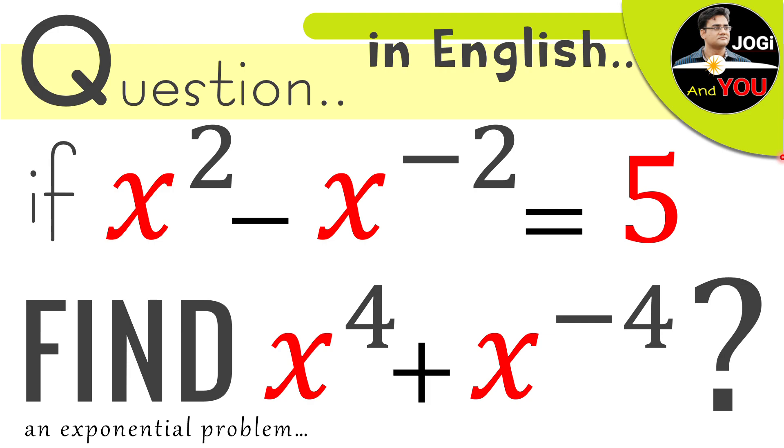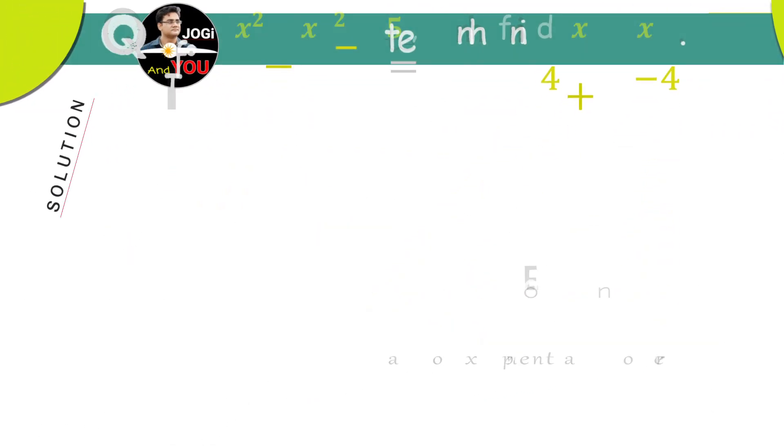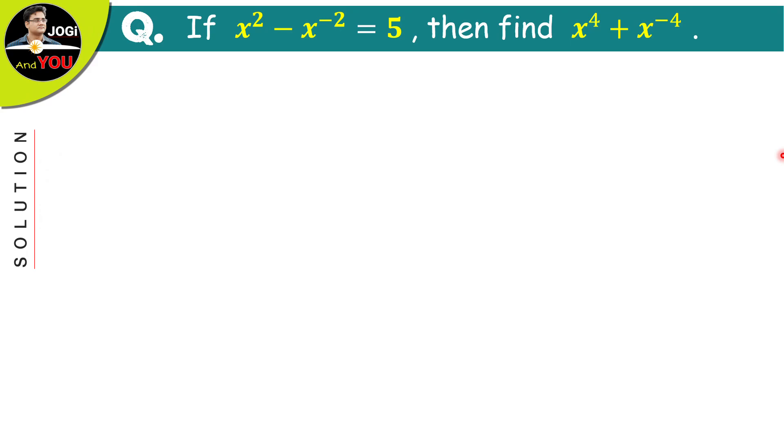We have an equation in which we get x squared minus x raised to the power of minus 2 is equal to 5, and with the help of this equation, the expression whose value we have to find is x raised to the power of 4 plus x raised to the power of minus 4. So now, this is our query and we have to find the value of this expression.